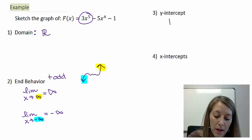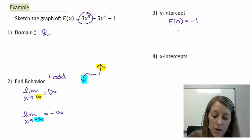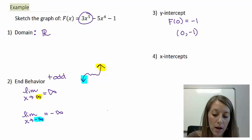The y-intercept, we do that by plugging 0 into the function. We get out our constant term, so that means we have the ordered pair (0, -1).